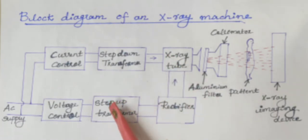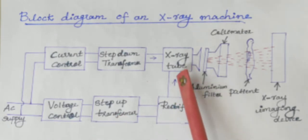In order to supply high DC voltage to the anode, the AC supply is stepped up using a step-up transformer and it is rectified and given to the anode.